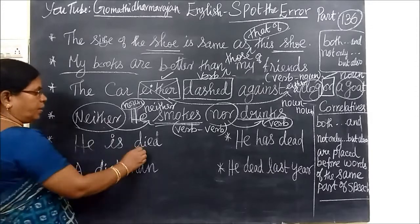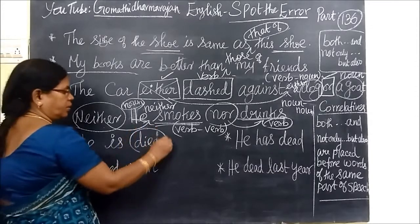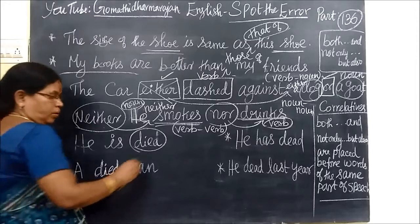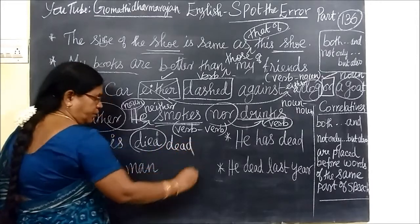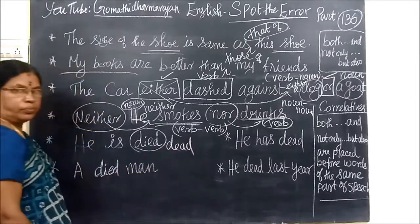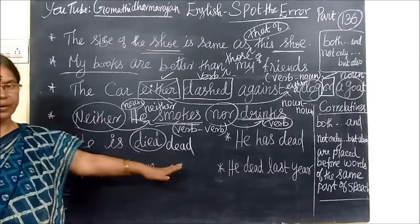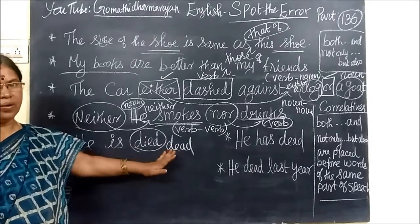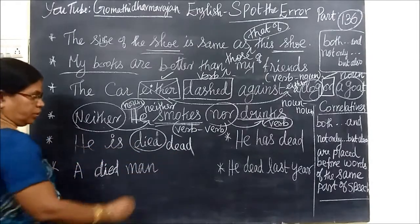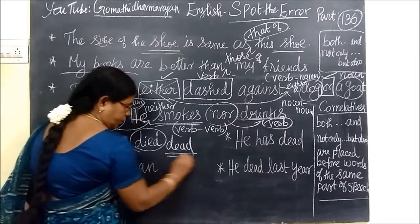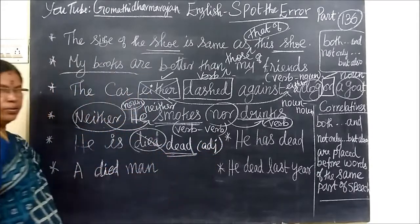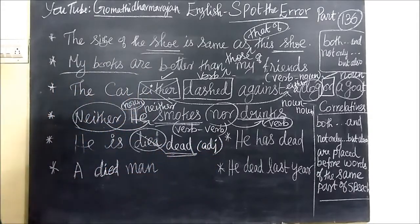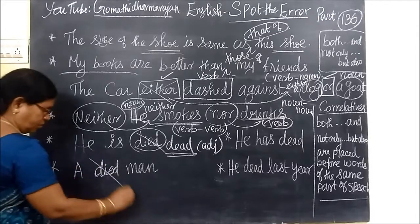He is died — 'died' is a verb. But it should be called 'dead'. Dead is an adjective. He is dead — that is the adjective form. So 'dead' is an adjective. He is died is wrong. He died — this is also the correct verb form.